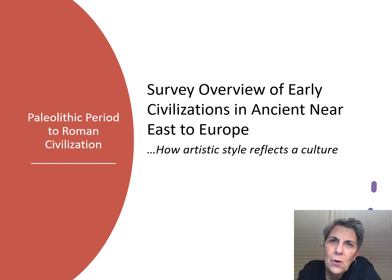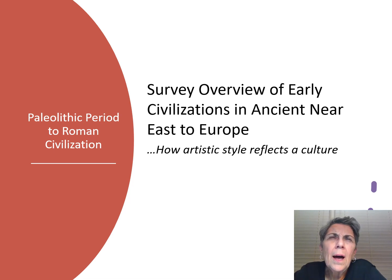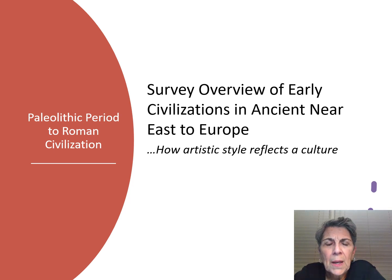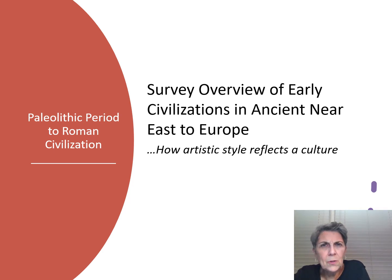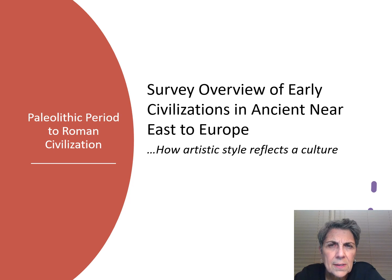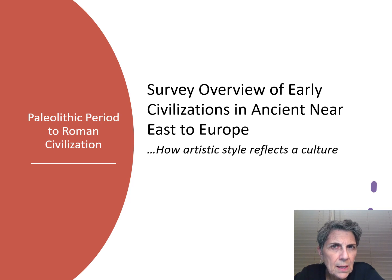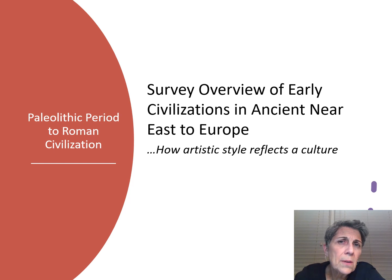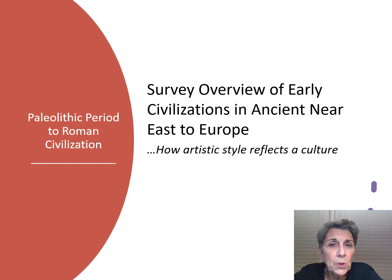Welcome. We're going to start now on the first part of history, which is Paleolithic, and we're going to do this really quick survey and end with the Romans. As this title states on this first PowerPoint slide, that really artistic style, these artifacts that you're looking at, they really reflect everything about the culture they exist in. Just like today, our music, the objects we create, the architecture we build, everything reflects our belief systems and what is important to us in culture.